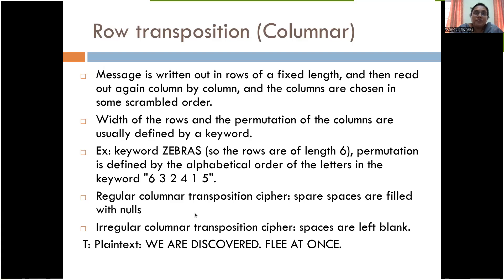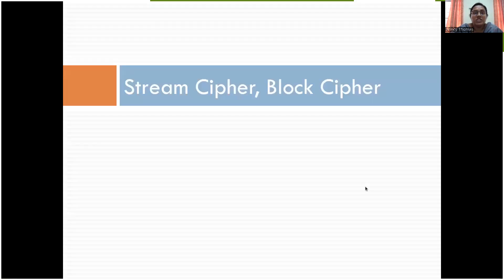This is the tutorial: encrypt 'we are discovered flee at once' using the columnar transposition. Regarding special characters or full stops — some cases include them, some don't; either way the meaning remains the same. To summarize: based on the number of alphabets in the key we create the rows, and then depending on which alphabet comes first alphabetically, that column is written first for the cipher.